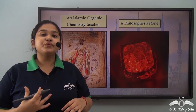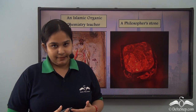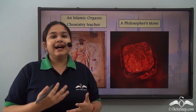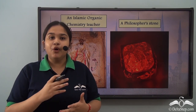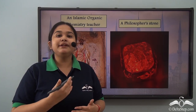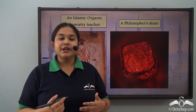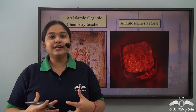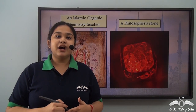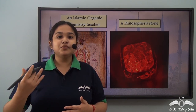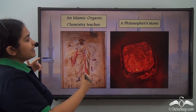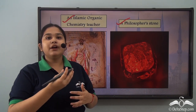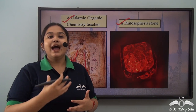During those times, people who studied chemistry were known as alchemists. They believed the philosopher's stone would turn any ordinary metal into gold. But in searching for or trying to create the philosopher's stone, they discovered new metals and drugs that ultimately led them toward modern chemistry. Here you can see the philosopher's stone, and the Islamic chemistry teachers and scholars who conducted these experiments and studies.